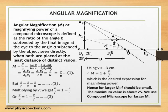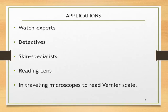Some of the applications of the simple microscope are: it is used by watch experts to repair the watch, it is used by detectives on some site which they want to study, it is also used by skin specialists to observe bacteria and problems in the skin, used as reading lens in general if you want to see a magnified view of a book, and it is also used in traveling microscopes to read the vernier scale.